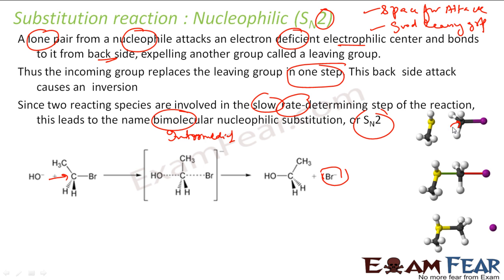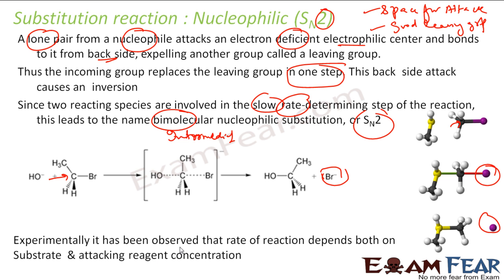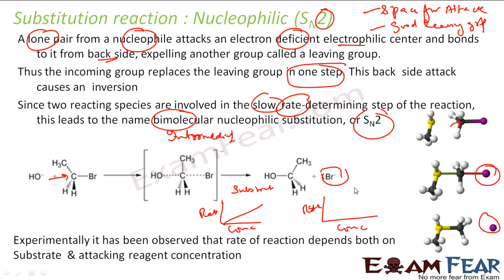There is space to attack, so the nucleophile attacks from behind, an intermediate is formed, the leaving group departs, and you get the product. Experimentally, if you increase the concentration of the substrate, the rate increases. Similarly, if you increase the concentration of the nucleophile, the rate also increases. So the rate is dependent on both substrate and nucleophile.